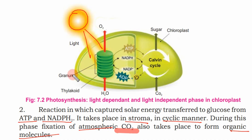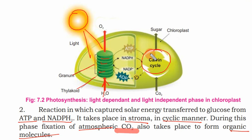Looking at the figure, you can see the sun providing light energy. Here is the granum, which is the stack of thylakoids. H2O is used in the reaction, which takes place in a cyclical manner. This reaction is known as the Calvin cycle.